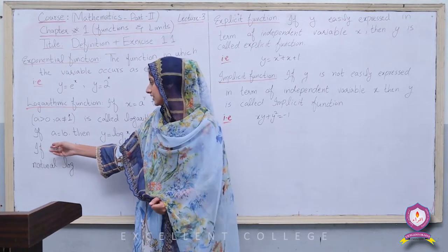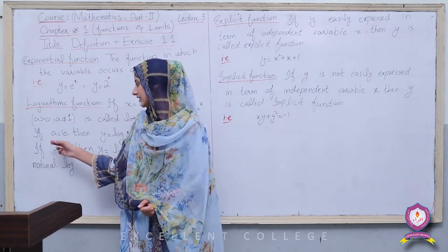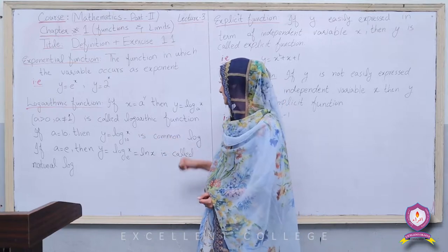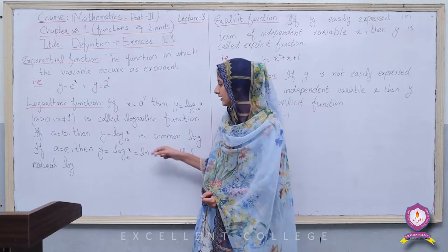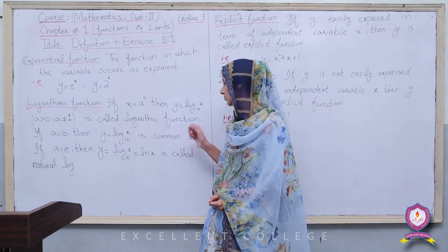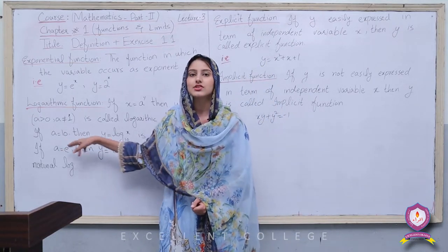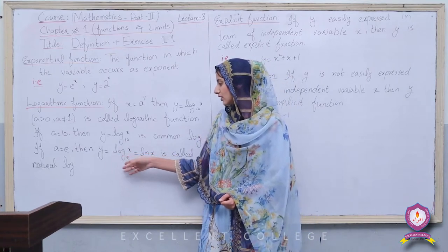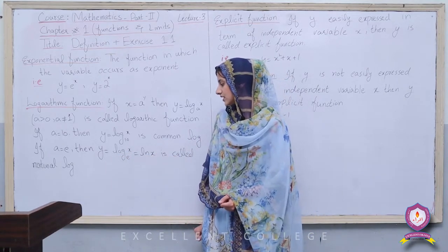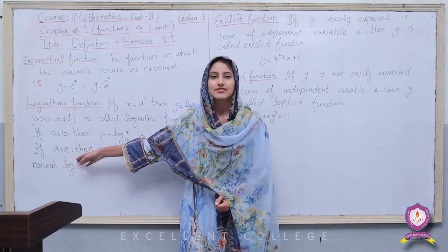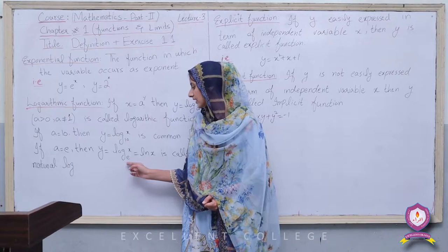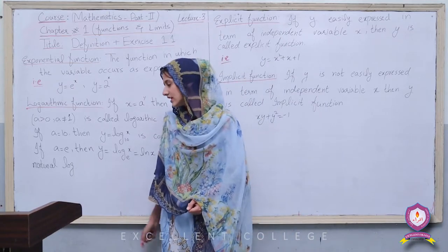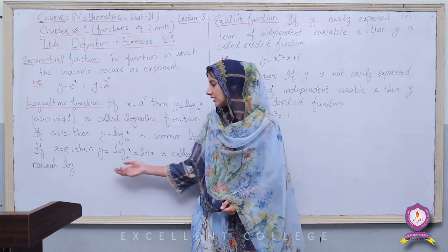Now let's put values of a. If a = 10, then y = log₁₀(x) — this is called Common Log. If a = e, then y = log_e(x) = ln(x) — this is called Natural Log.